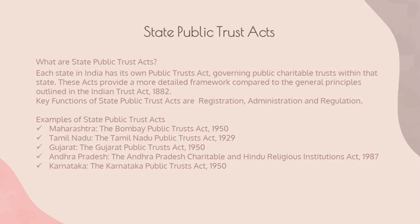For example, in Maharashtra, the Bombay Public Trust Act of 1950 is a well-known law that applies to public charitable trusts. It makes it mandatory for these trusts to register and sets out rules for managing their property. It also establishes the Charity Commissioner's Office to supervise trust activities. Similarly, in Tamil Nadu, the Tamil Nadu Public Trust Act of 1929 governs public charitable trusts, focusing on registration, administration, and regulation. In Gujarat, the Gujarat Public Trust Act of 1950 provides the legal framework for such trusts, emphasizing legal benefit and detailing procedures for managing trust property and finances.